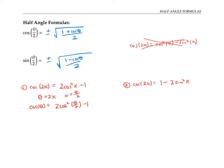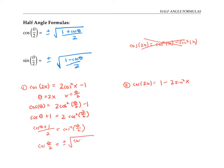Now I'm going to solve for cosine of theta over two. I'll add one to both sides, divide both sides by two, and take the square root of both sides. That gives me that cosine of theta over two is going to be plus or minus the square root of cosine theta plus one over two, which is the formula we're looking for.